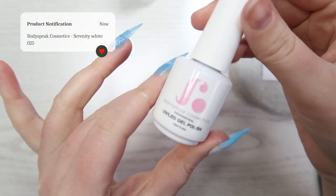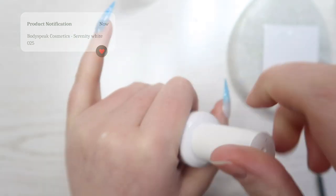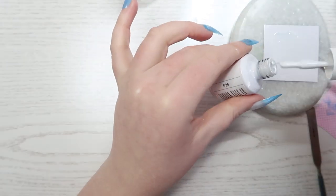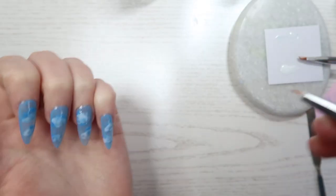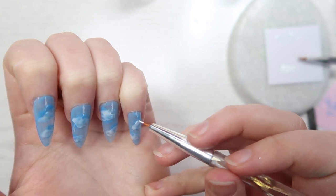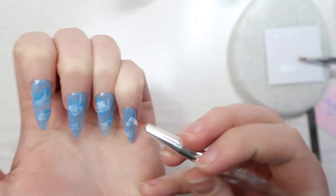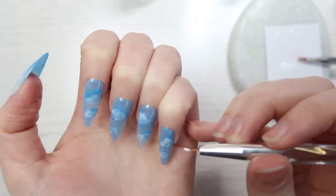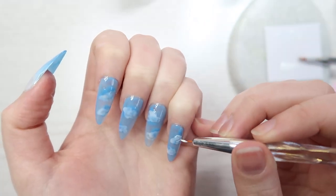Next, I'm using a fine liner brush to apply some regular white gel polish on top of the white smudges we just added to the nail. This will give just a little bit more dimension to the nail.